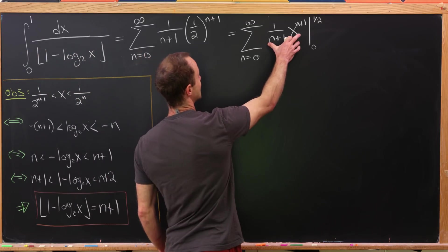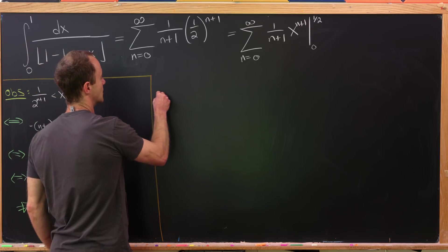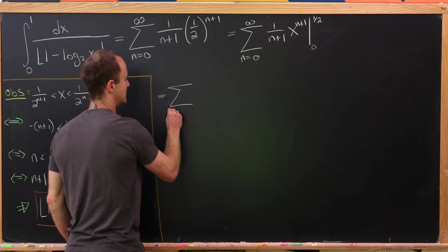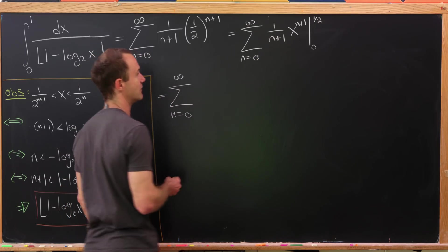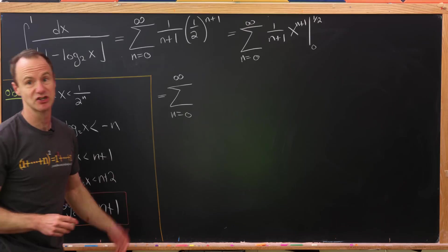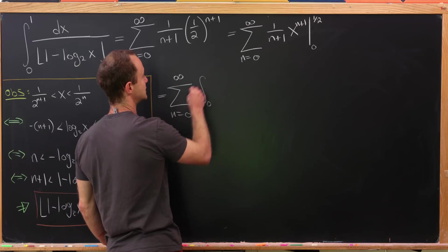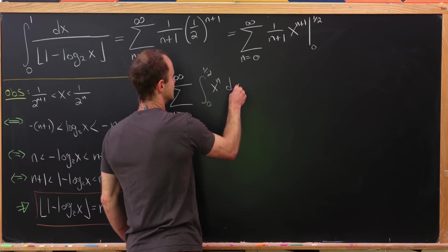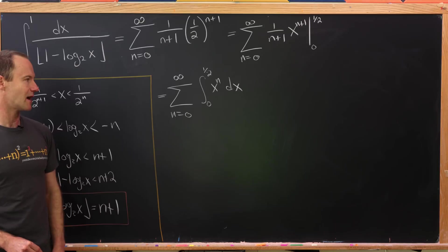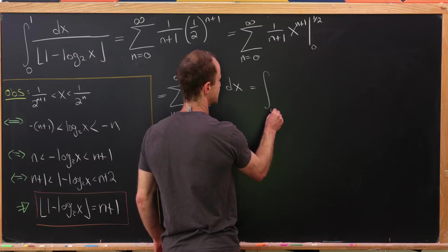So now we've got the sum n goes from 0 up to infinity. Well, taking the derivative of that, we actually get something nice. It's just x to the n. So we have the integral from 0 up to 1 half of x to the n dx. But now by the dominated convergence theorem, we can switch the order of summation and integration.